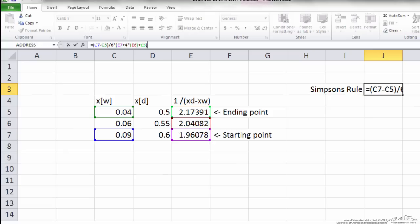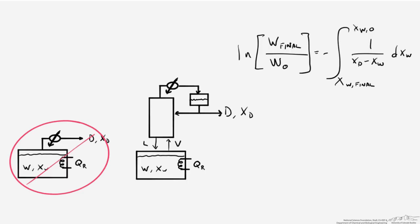When we evaluate that term, we now have an approximation for the right-hand side of the Rayleigh equation. We can then do the simple math using our initial charge to the reboiler and calculate the final number of moles in that reboiler.